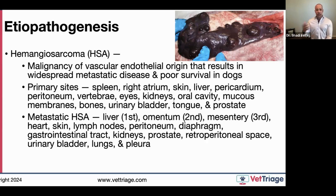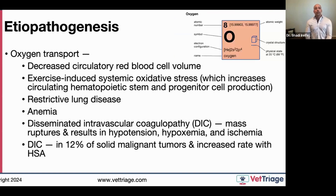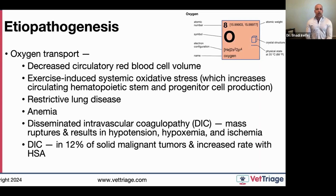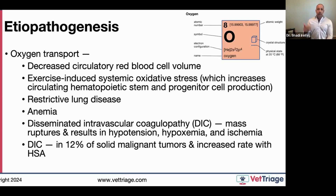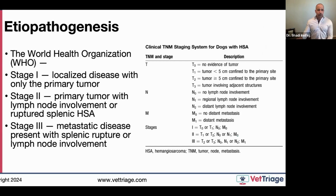Once the splenic mass ruptures, there are many sequelae making these patients critical: decreased oxygen transport from reduced circulating red blood cell volume, exercise-induced systemic oxidative stress increasing hematopoietic stem and progenitor cell production, restrictive lung disease, anemia, and DIC. DIC is seen in 12 percent of solid malignant tumors and at an increased rate with hemangiosarcoma. Hindrance to oxygen transport is a massive reason why these pets struggle preoperatively.